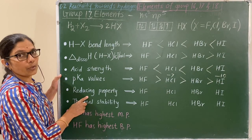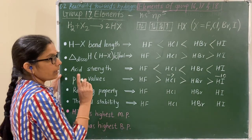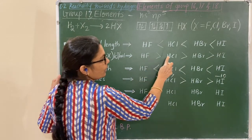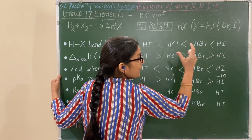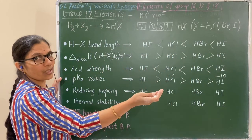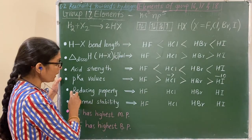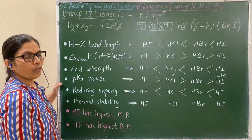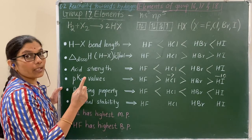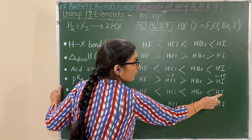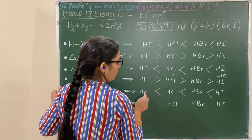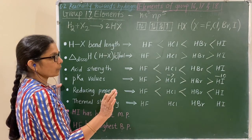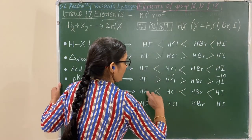Reducing property: if bond dissociation enthalpy goes on decreasing, the bond breaks easily and gives H easily — so reducing property goes on increasing down the group. HI is the strongest reducing agent among the hydrogen halides. HF does not show reducing property.